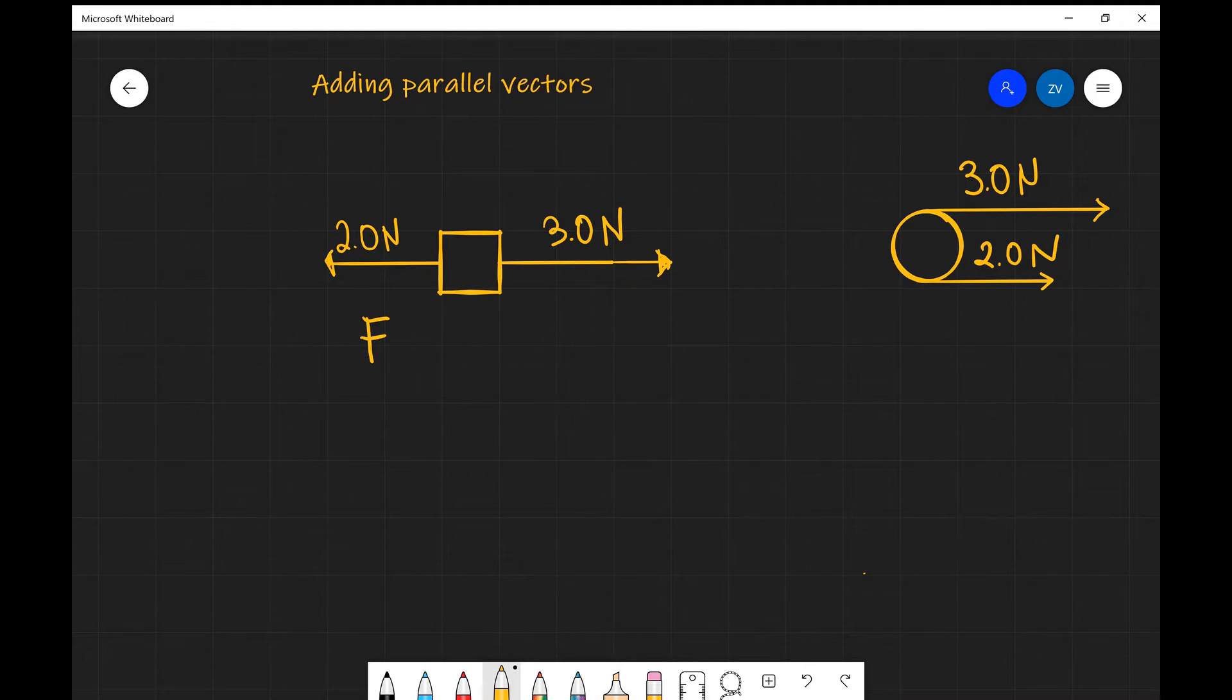the resultant force, should we just call that FR, for the resultant force here is going to be 1 newton. Now this is just the magnitude of the force of course. The best way to represent this is either by stating the direction, for example we can say that it's 1 newton to the right,